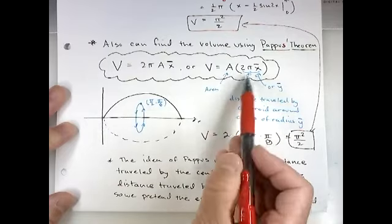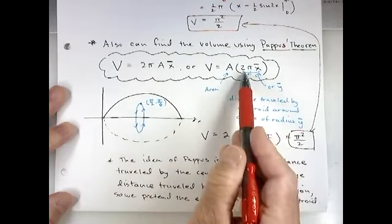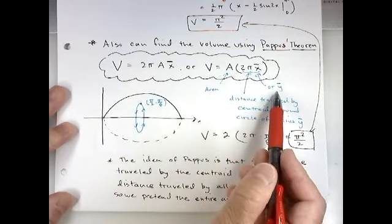And so what Pappus realized is if we just take the area of our cross section, the area of sine of x, multiply it by the distance traveled by the centroid, which would be a circle. The perimeter of a circle is 2π times the radius. So it could be 2π x̄, or in this case, ȳ.